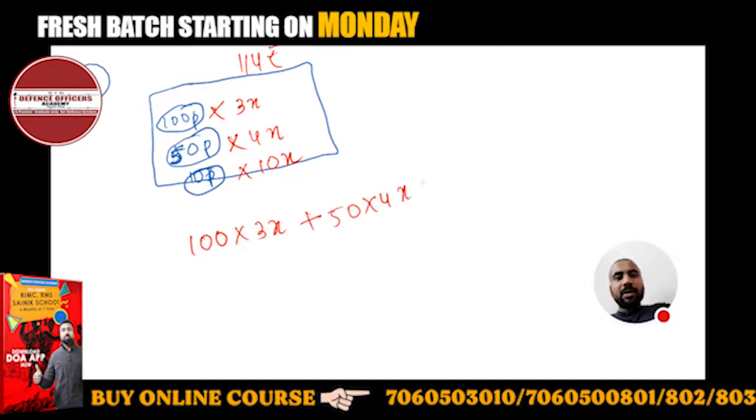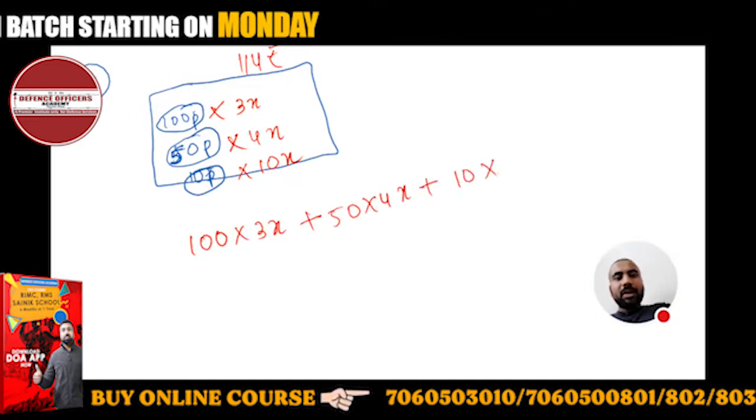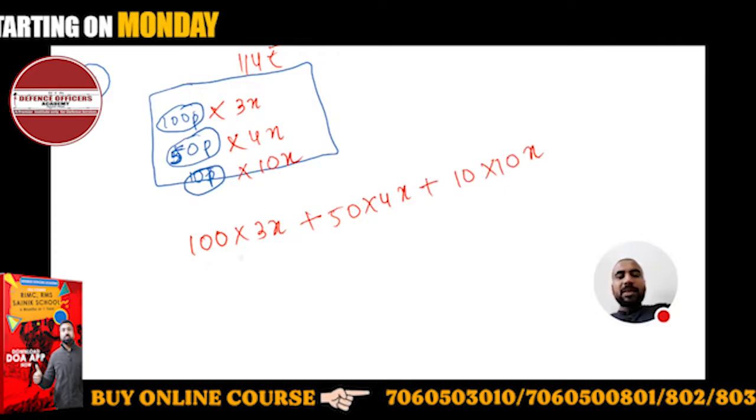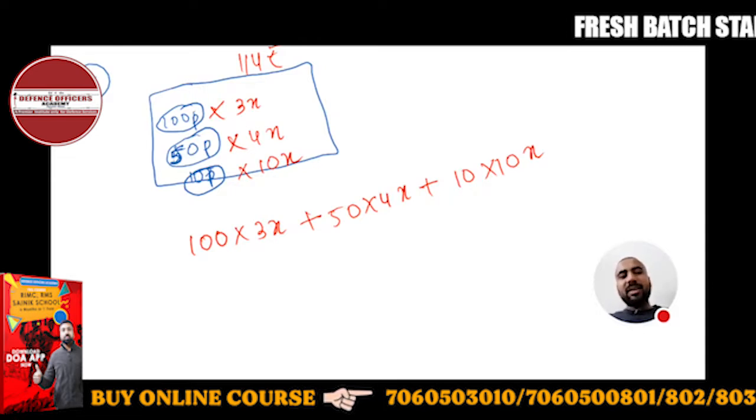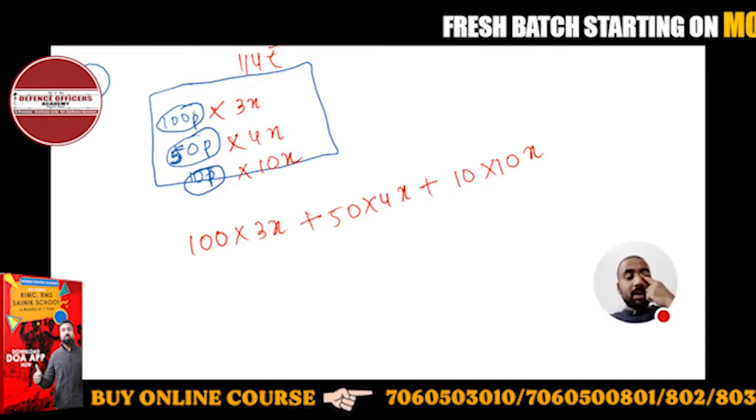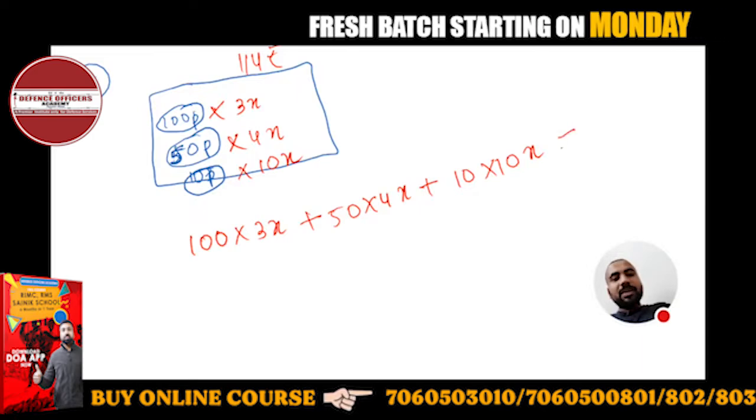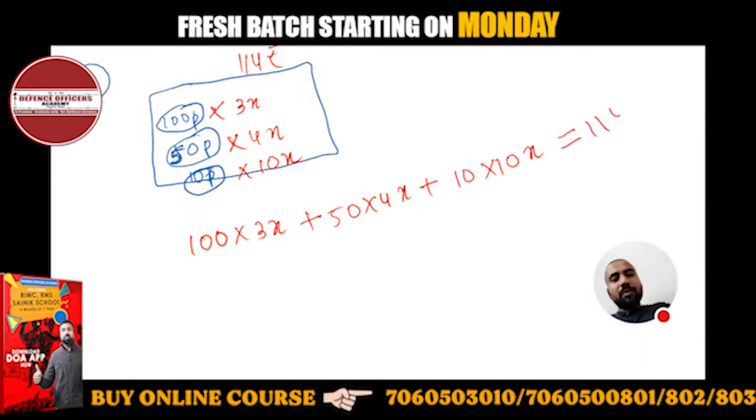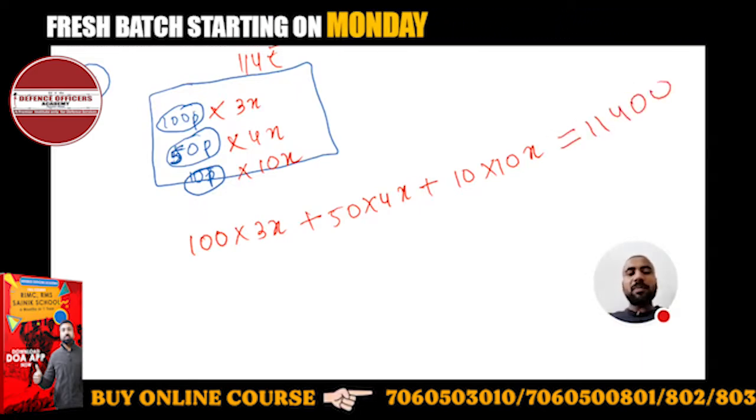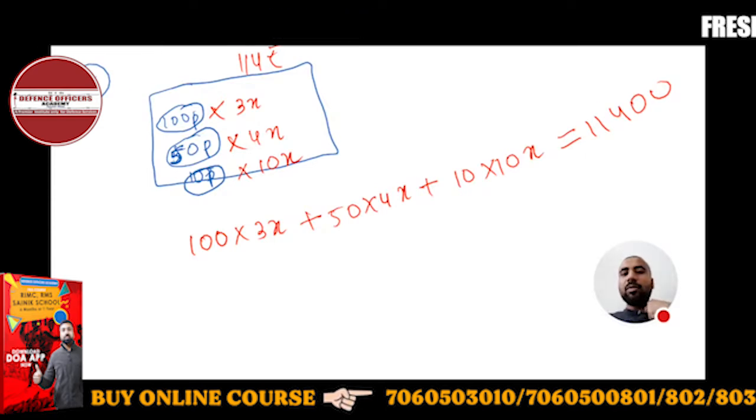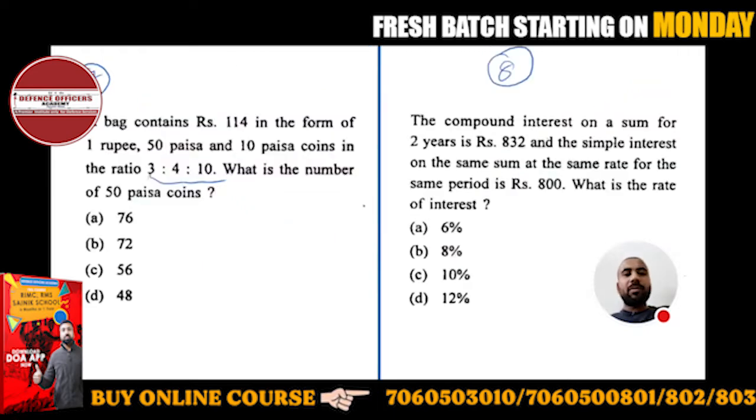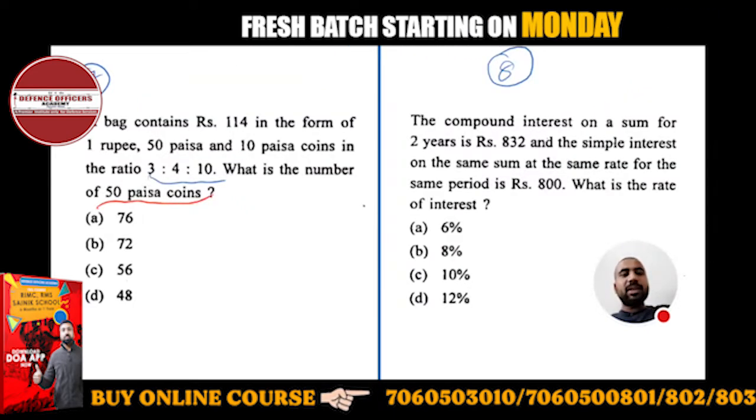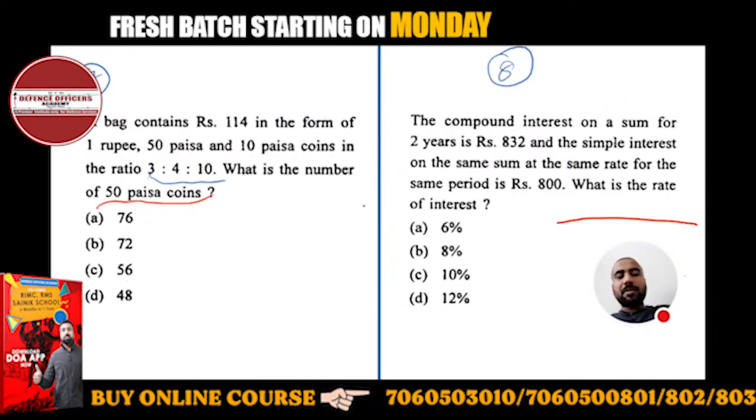If you will add all the rupees you will get 114. So this is going to be 100 paisa into 3x plus 50 paisa into 4x plus 10 paisa into 10x. When I add all of them it will come in paisa only, so it will be 11400. We have to convert rupees to paisa. What is asked? 50 paisa coins.